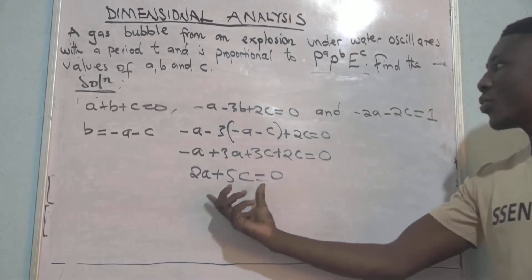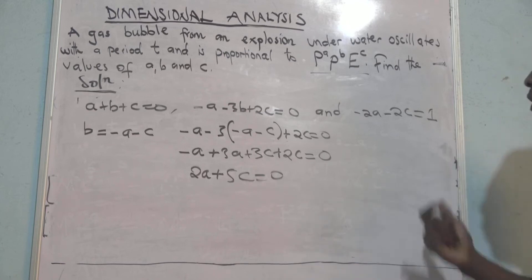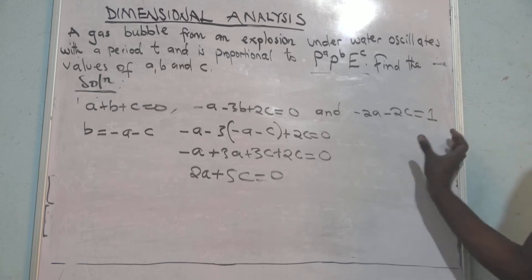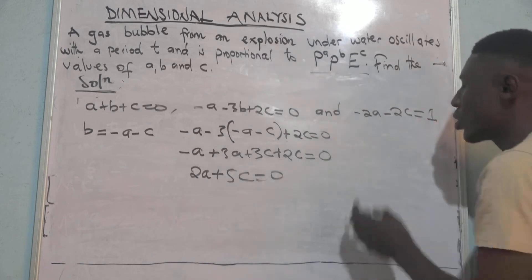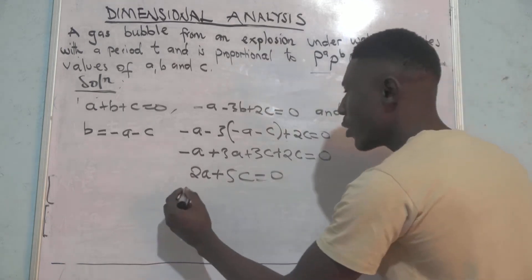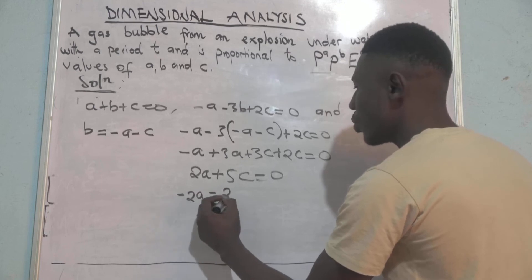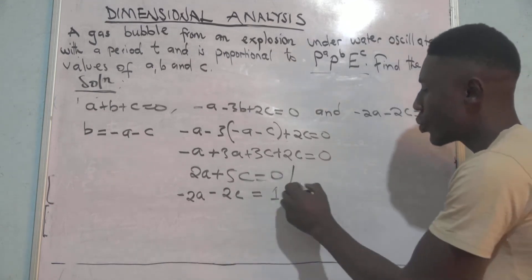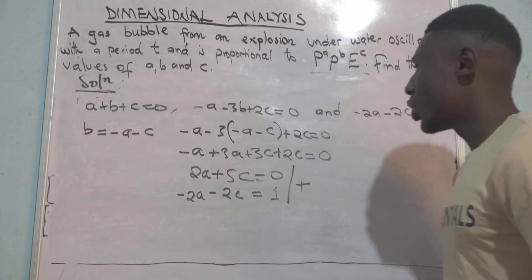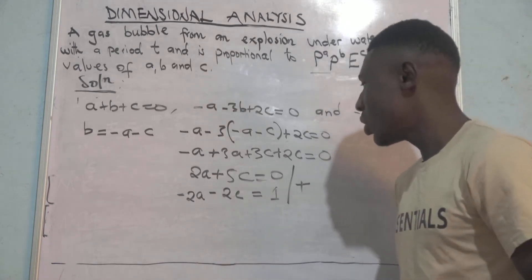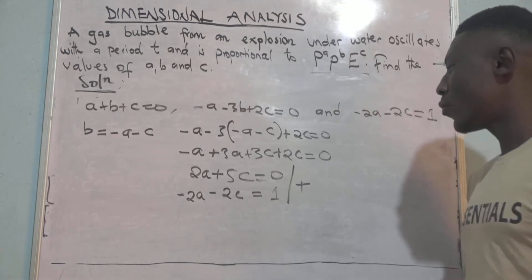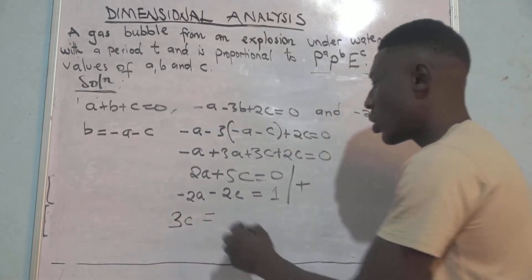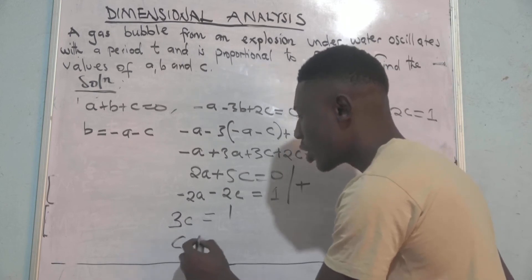Comparing this result with the T equation, both involve only A and C, so we solve them simultaneously. We have 2A plus 5C equals 0, and negative 2A minus 2C equals 1. Using the elimination method to eliminate A, adding the two equations gives 3C equals 1, so C equals 1 over 3.